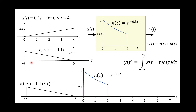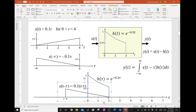The next step is to shift x(-τ) by t, because I want to find the output at different values of t. If I want to find the output at 2 o'clock, I have to slide this input until it is at 2 o'clock. When t equals 2, the system will see the present input and will start processing it, while it has already seen and is processing earlier parts of the input.